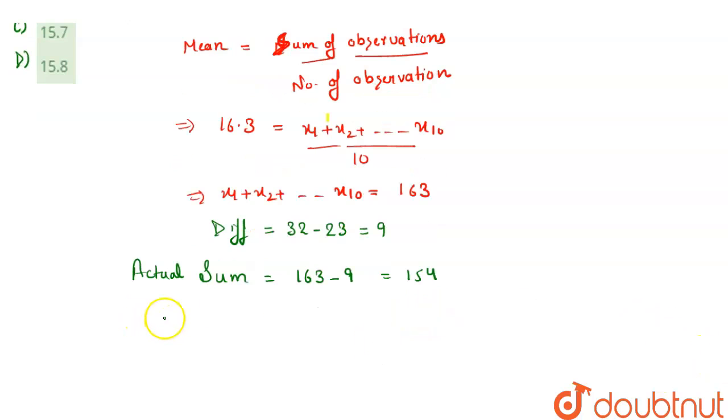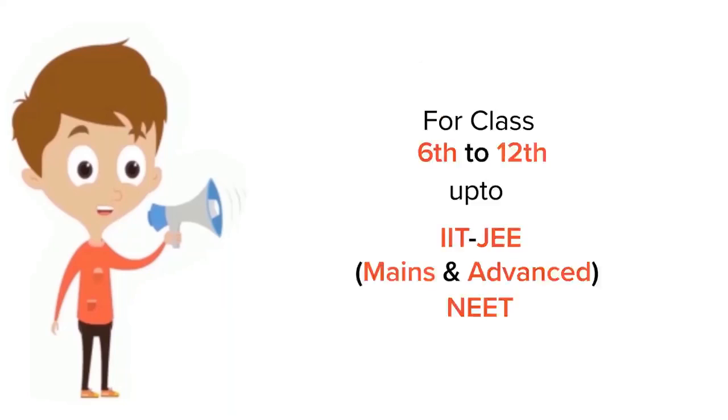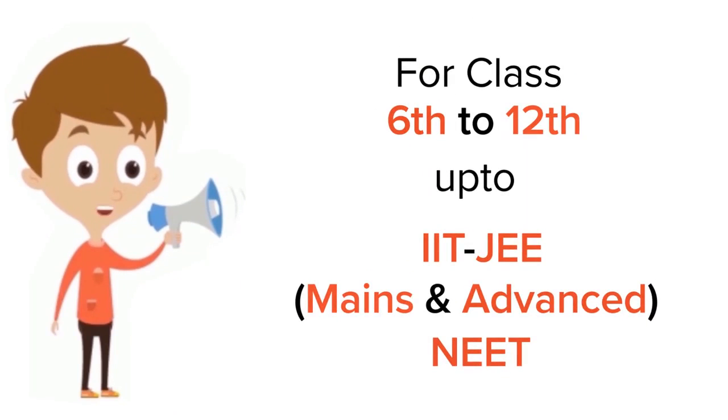for mean, what we can say: mean equals 154, that is the sum of observations, divided by number of observations, which is 10. So answer would be 15.4. So required mean is 15.4, which is option B. Option B is the correct answer. Thank you.